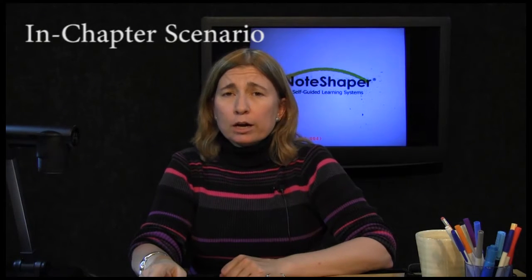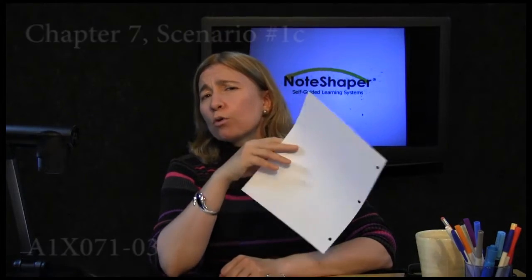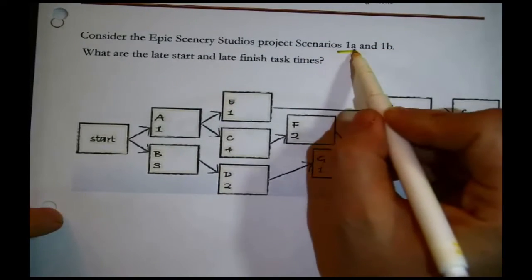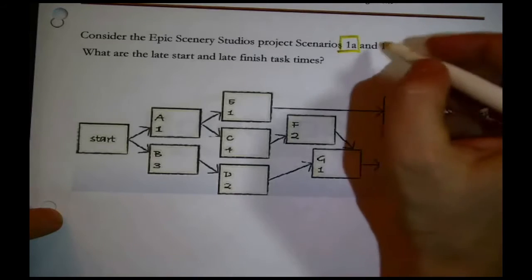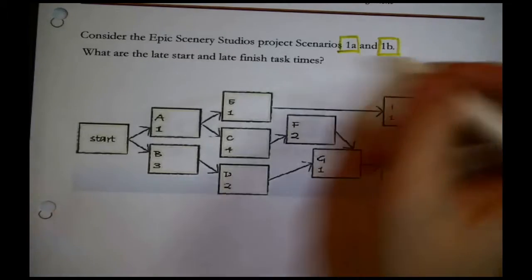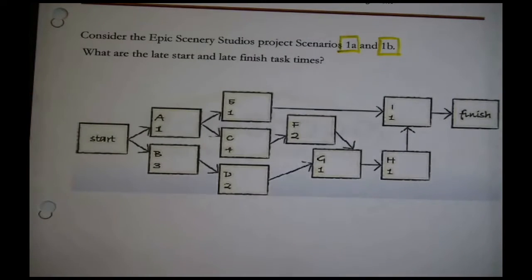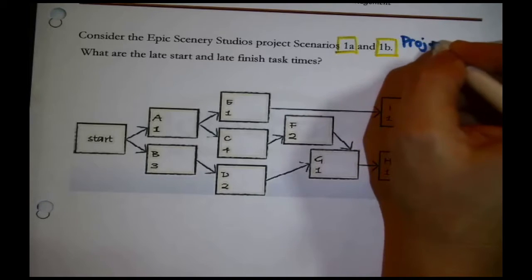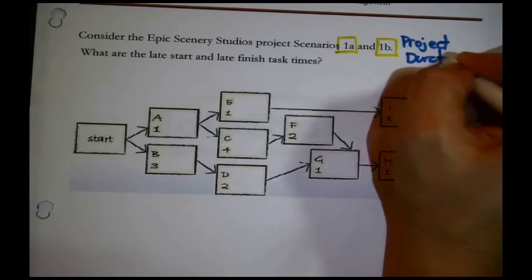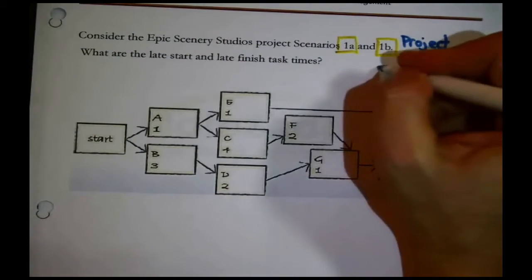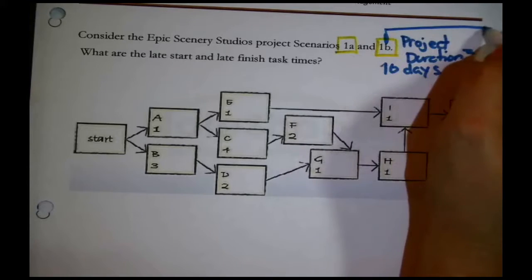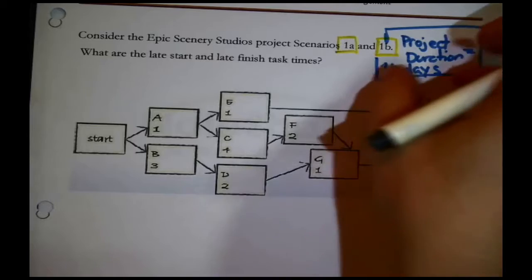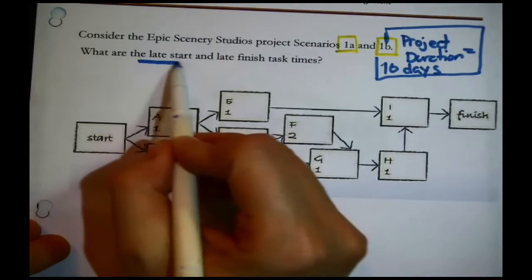To find the late start and late finish times in a project analysis, you have to already know the duration of the project. In this particular situation, we do because we've been working on the Epic Scenic Studio project earlier. In Scenario 1a we drew the diagram, and in Scenario 1b we calculated the early start and early finish times. That revealed the project duration for this entire undertaking was 10 days. That's not what's being asked here — what's being asked is: what are the late start and late finish times?